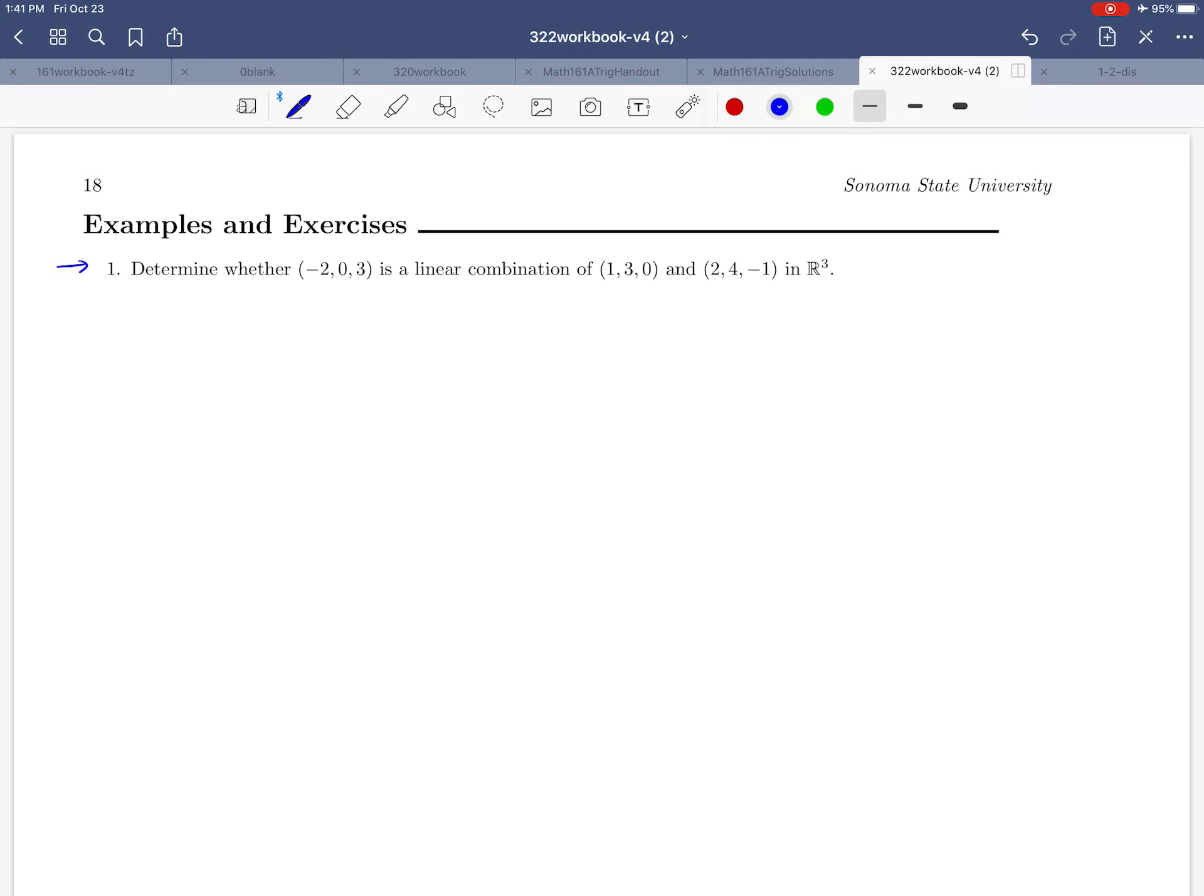So let's read part one and see what they're asking us to do here. They'd like us to determine whether the vector (-2, 0, 3) is a linear combination of the vectors (1, 3, 0) and (2, 4, -1).